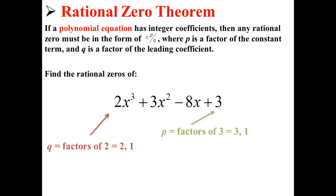Here, q is equal to the factors of 2, which are 2 and 1, and p is equal to the factors of 3, which are 3 and 1.